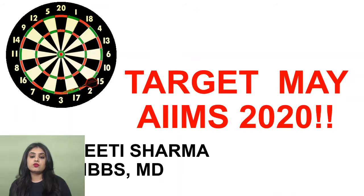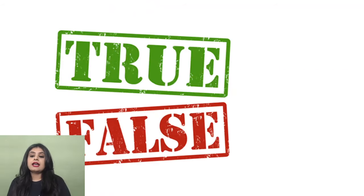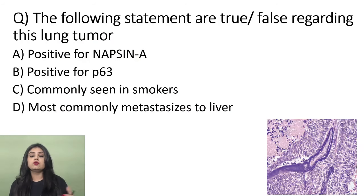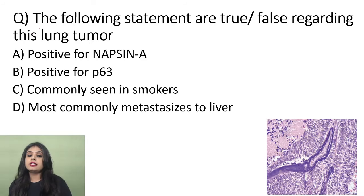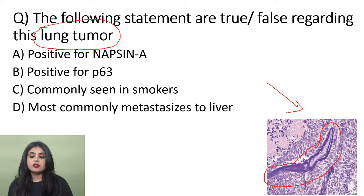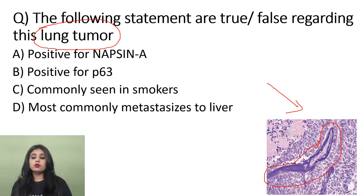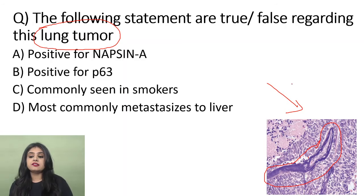Let's begin this high-yielding session. The first pattern is a true/false question: given an image of a lung tumor, label each statement as true or false. You should first identify what is being shown. There is a luminal structure — a blood vessel — but the wall has become very blue. This is known as the Azopardi effect.